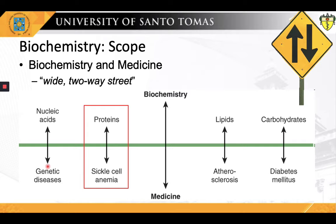Studying lipids such as cholesterol has led many inroads to the pathogenesis of atherosclerosis and consequently coronary artery disease. The search for breakthroughs in cardiology has led to not a few discoveries in the study of lipids. And of course, we cannot overestimate the importance of the study of carbohydrates in leading the way to the diagnosis, management, and prevention of diabetes mellitus, and vice versa. However, what could probably be the best and classical example of the interrelationship of biochemistry and medicine is the study of proteins vis-à-vis sickle cell anemia. We will be exploring this interesting interrelationship in the next slide.